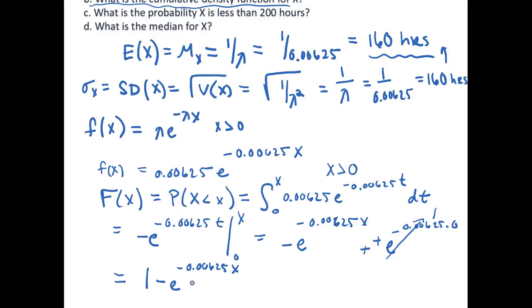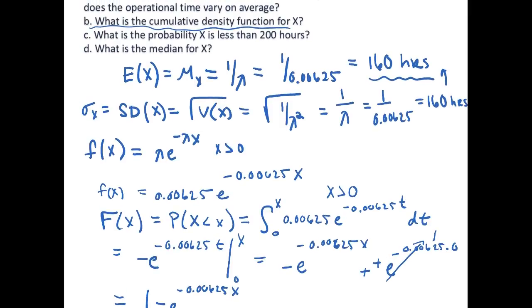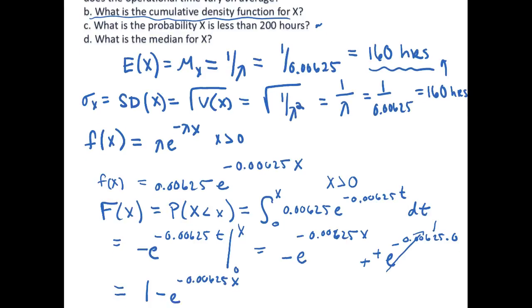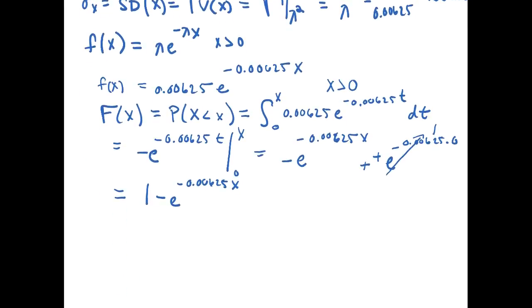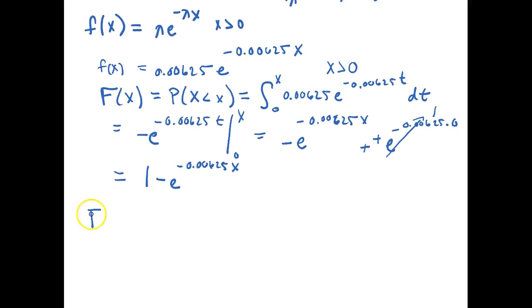So now if I look at c it asks what is the probability that X is less than 200 hours? Instead of integrating I can simply just use my cumulative density function.